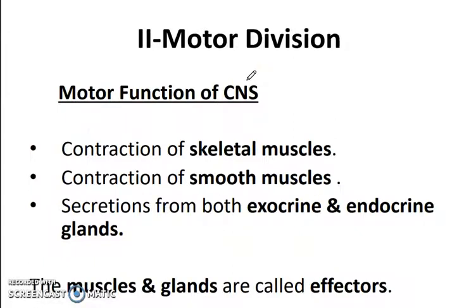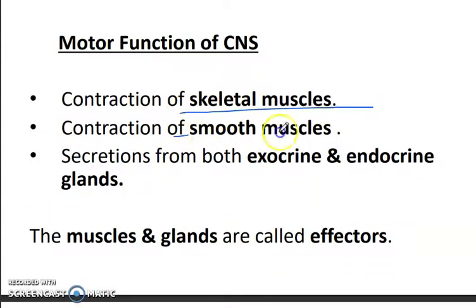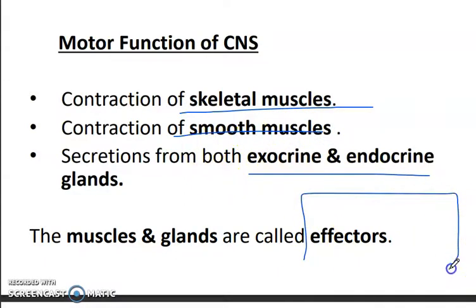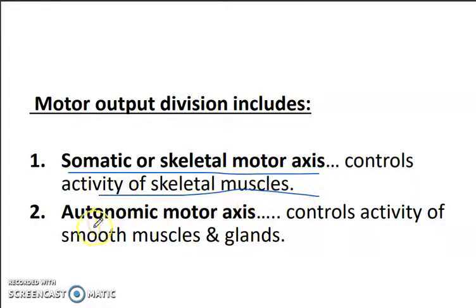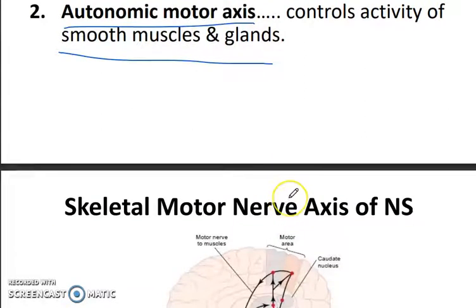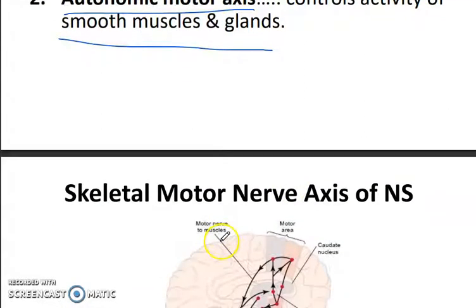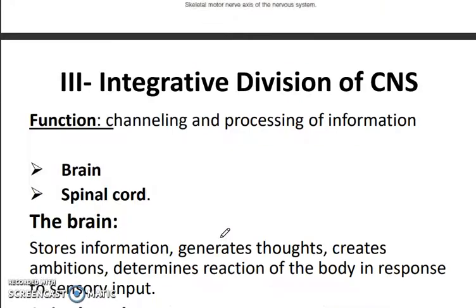In the motor function of the CNS there is contraction of skeletal muscles and smooth muscles, and secretion from both exocrine and endocrine glands — these are called effectors. The motor operation includes somatic or skeletal motor axons, which control the activity of skeletal muscles, and the autonomic motor axons, which control the activity of smooth muscles and glands.